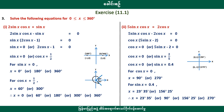The next step is to solve the following equation: 0 is equal to 0. 2 sin cos sin sin. 2 cos minus 1 is equal to 0. 2 cos minus 1 is equal to 0. 3 minus 1 is equal to 0.